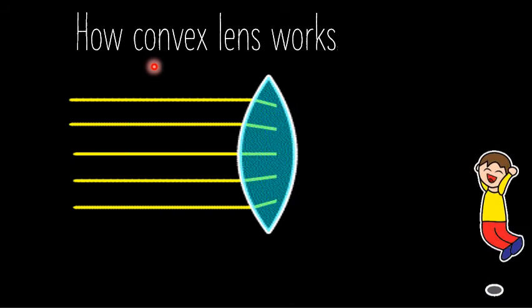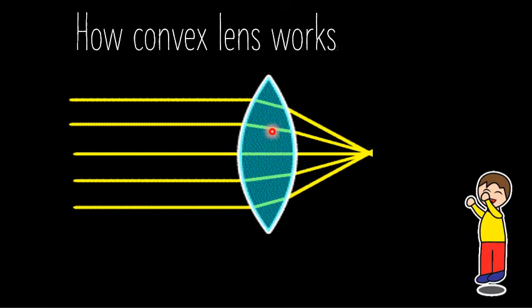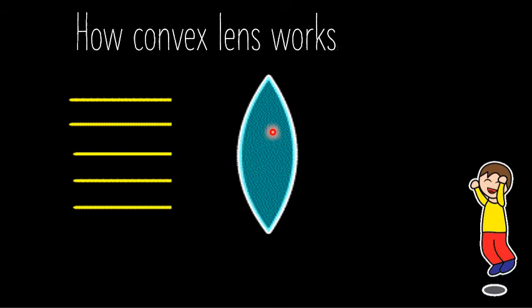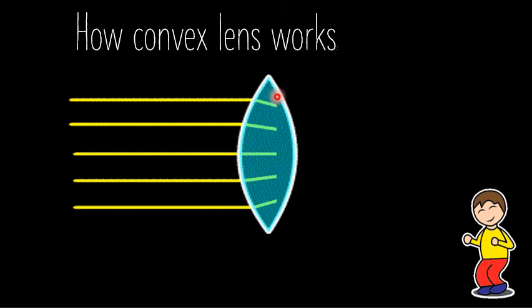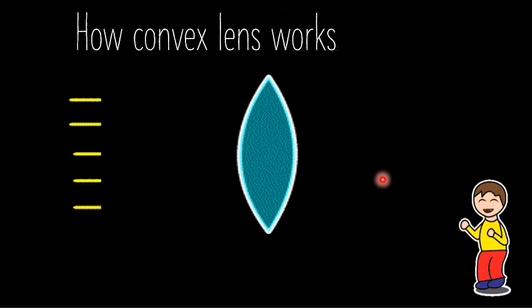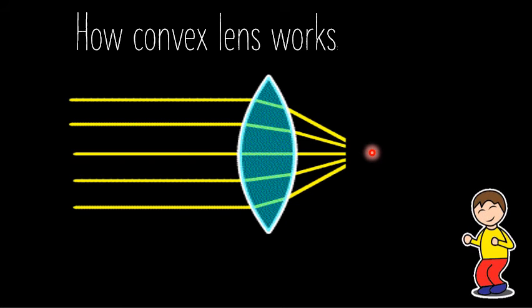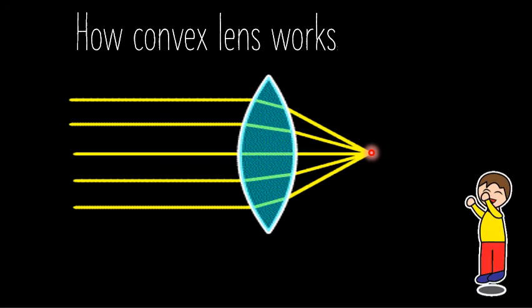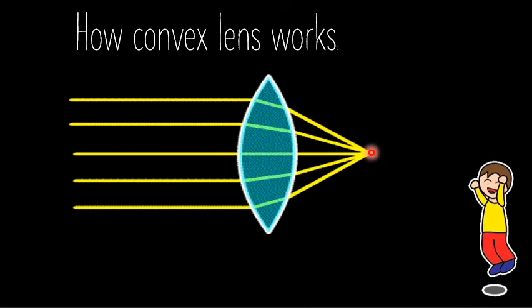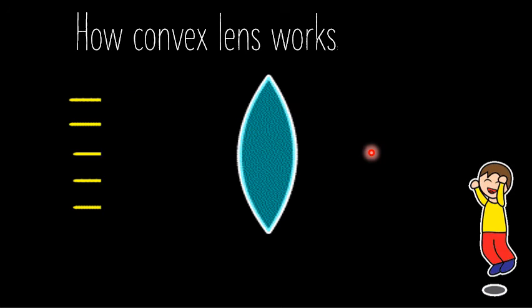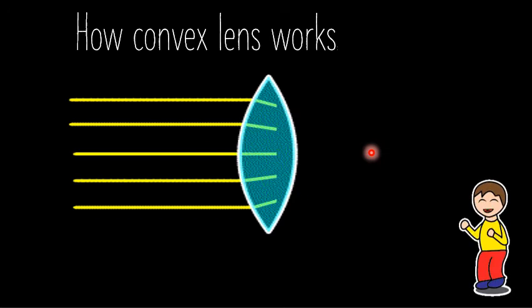This is how the convex lens works. It is a lens that curves outward, as shown here. It changes the direction of light like every lens does, but specifically it collects all the light rays at a single point. Here is that point where all the light rays are collected.